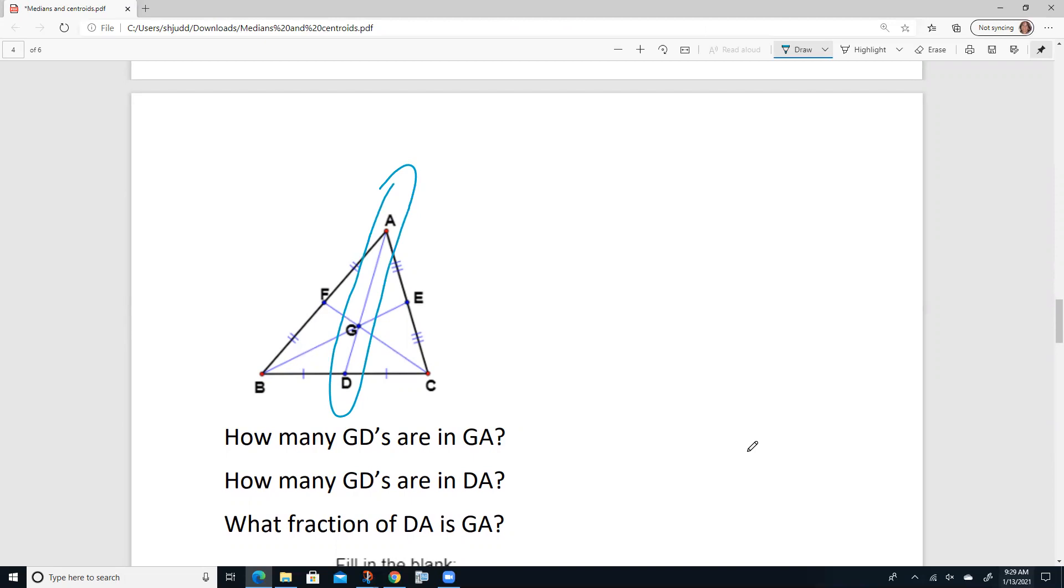Well, it turns out for this little distance, if we copied that, it would copy twice. So there are two GDs inside of GA. Two of the little ones inside that median.